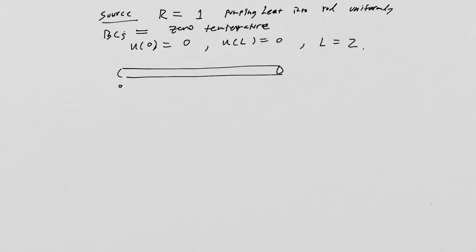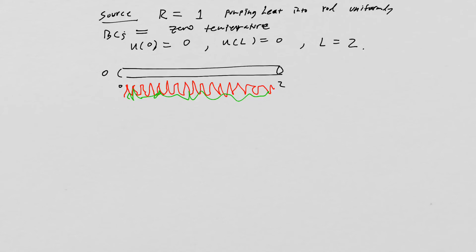The rod goes from zero to two with a uniform heat source — think of it as lighting a grill underneath, pumping in uniform heat like flames, while the ends are fixed at zero degrees. The question is: where will the rod be the hottest?